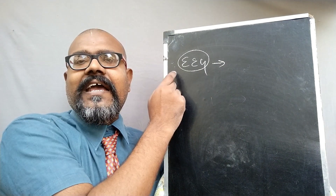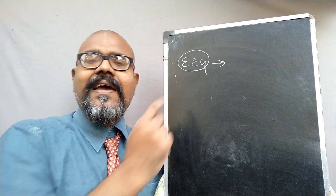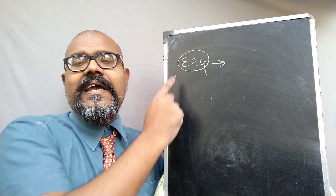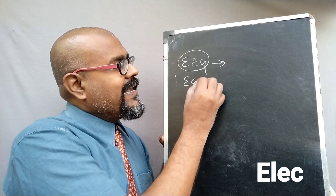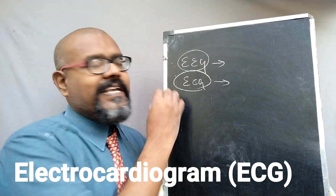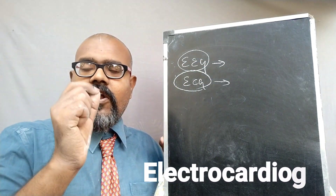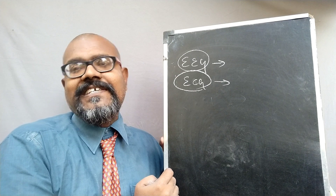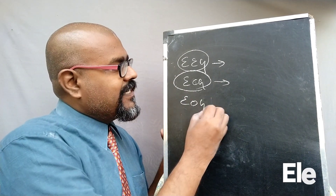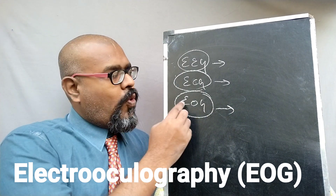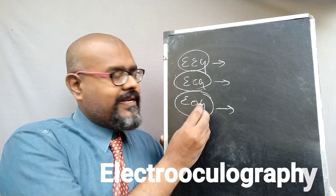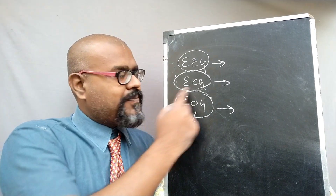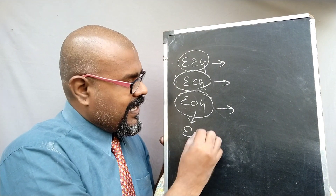Using this particular signal we can understand the normality and abnormal condition of the brain — it shows the electrical activity of the brain. Then ECG — of course you all know that ECG is nothing but electrocardiogram; cardio indicates the heart, so the electrical activity of the heart can be studied using ECG. Then EOG — electro-oculogram — we can study the electrical activity of the eye using the electro-oculogram.